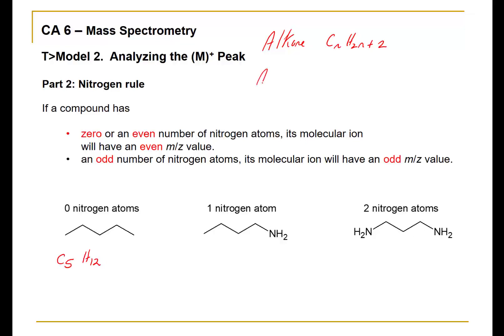If we have an alkane with a single amine functional group, then the standard formula would be CnH(2n+3). So with four carbons, that is C4, and then 2 times 4 plus 3 gives H11. Of course, the standard formula is also missing the nitrogen, so the molecular formula for that compound would include N, giving C4H11N.